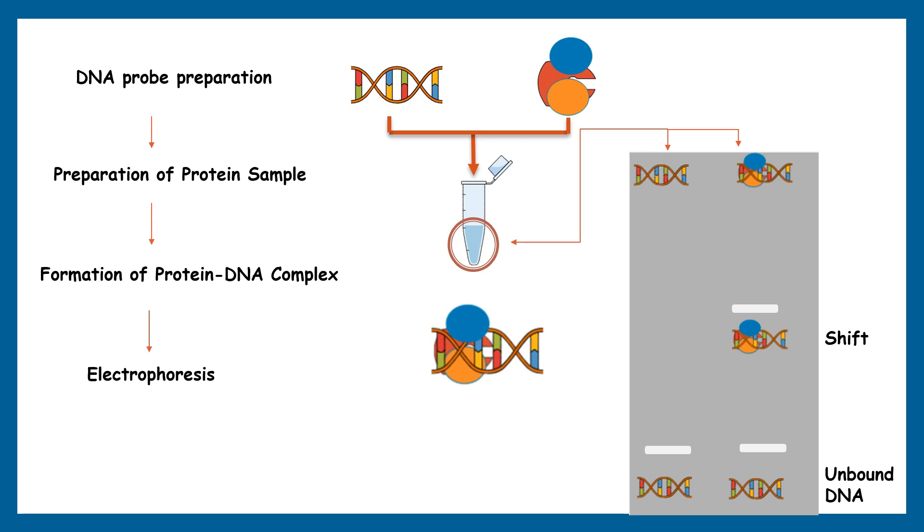When an electric field or electric current is applied to the gel, the DNA molecules, both in free form or in complex form with a protein, move through the gel. Since the protein-DNA complex is larger and more massive than free DNA, it migrates more slowly through the gel matrix, and that phenomenon is called a shift.